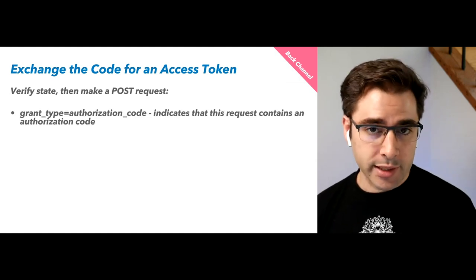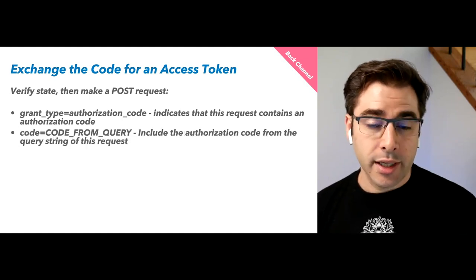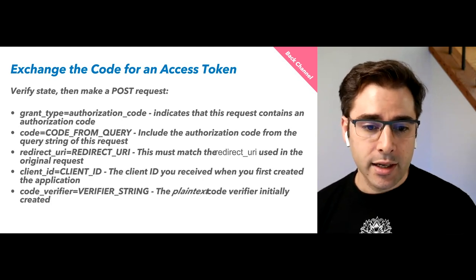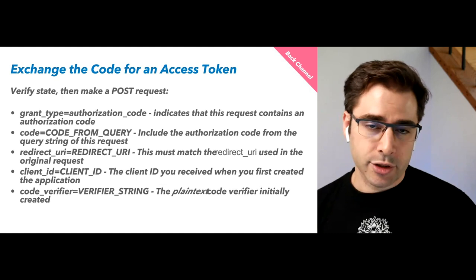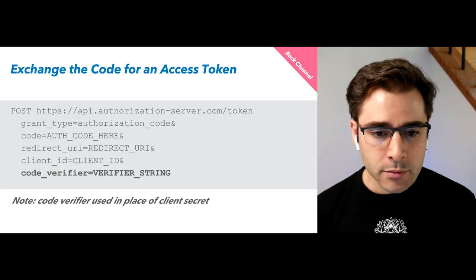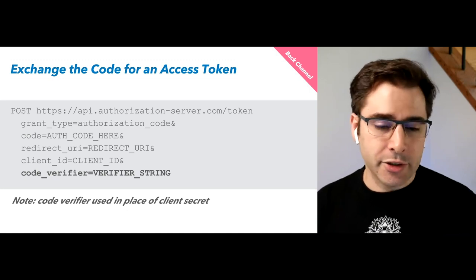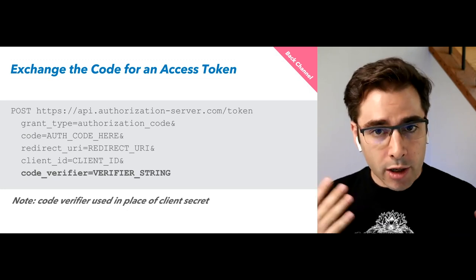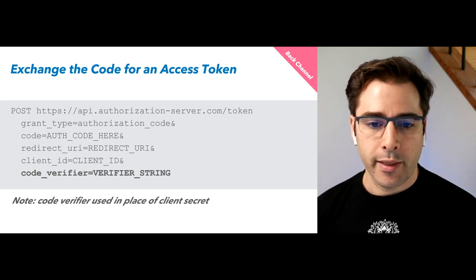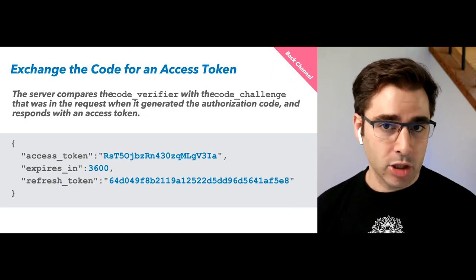Now the app makes a back-channel POST request to the OAuth server to exchange that authorization code for an access token. It includes: grant_type=authorization_code, the code from the query string, the redirect URI, the client ID, and the plain-text code verifier — the pre-hash value that the OAuth server will then hash and compare. For public clients like mobile apps or single page apps, there is no client secret used in this request. If you're writing a web server-based app, you would include the client secret. Then you get back an access token and the app can consider the user logged in.